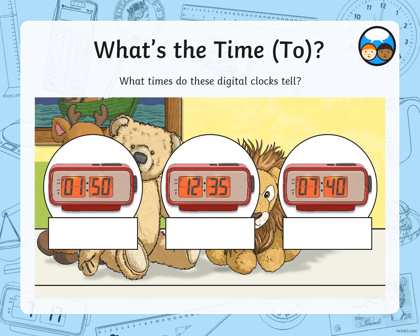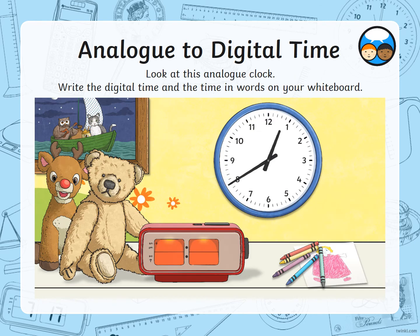This time, you need to write what time the digital clock says — either on a whiteboard at home or just on a piece of paper. Remember to pause the video whilst you do that. The first one is 10 to 2, and the second one is 25 to 1. Now we want you to write the digital time shown on the analogue clock — pause it while you work it out. Hopefully you can see that the small hand isn't on the 1 yet, so the hour is still 12, and then we count round the edge of the clock in 5s to get to 40.